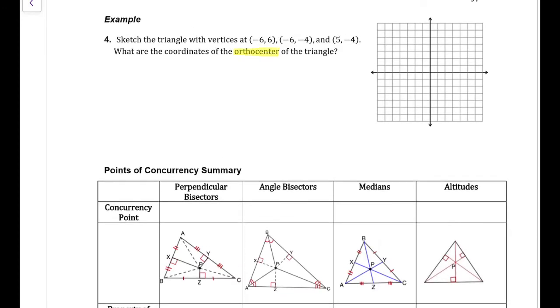On example 4, we're going to use what we know about orthocenters to find them on this triangle. We're going to plot the three vertices. So we have negative 6, 6, we have negative 6, negative 4, and we have positive 5, negative 4. We draw a right triangle.